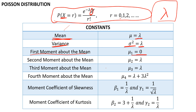The first moment about the mean is 0 — that we all know, as the first moment about the mean is always 0 irrespective of the distribution. The second moment about the mean is always the variance, so that is simply lambda again. The third moment about the mean is again equal to lambda. The fourth moment about the mean, mu 4, is equal to lambda plus 3 lambda squared. So this is something different — we need to remember: lambda plus 3 lambda squared.